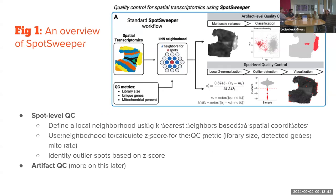Their solution is shown in Figure 1. For each spot, they find the k nearest neighbors, then rescale the quality control metrics to a z-score based on the distribution of just that local neighborhood. So if a spot has low counts in gray matter where its neighbors have high counts, that's a local outlier. But low counts in white matter where neighbors also have low counts makes sense biologically. They perform outlier detection on that local z-score rather than the global distribution. There's also an artifact quality control component discussed later.